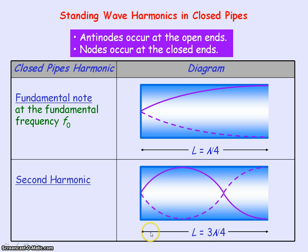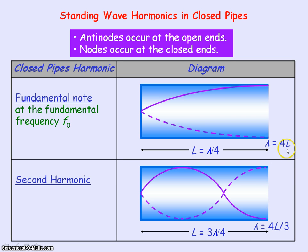Comparing the wavelength for the second harmonic with the first harmonic: for the first harmonic the wavelength equals four times the length of the pipe, whereas for the second harmonic the wavelength equals four-thirds times the length of the pipe. Going from the first to the second harmonic, the wavelength becomes a third of what it was, so the frequency becomes three times as large. The standing wave for the second harmonic in a closed pipe vibrates at a frequency of 3f₀.